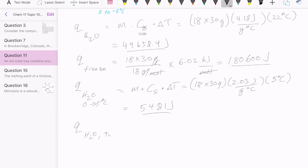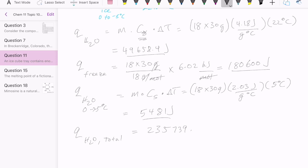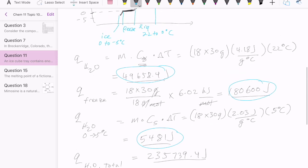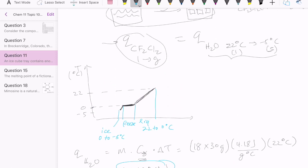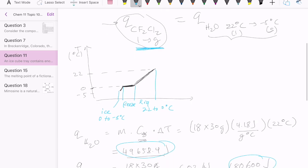Adding all of those together, we have the total release by water as it cools down. And that total is going to be 235,739.4 joules. So once we have that, we can say that that should be the same amount of heat that's going to be needed to convert my Freon or my CF2Cl2 from liquid to gas.